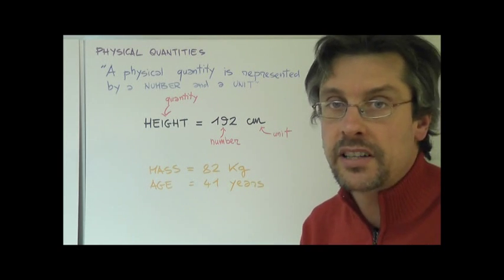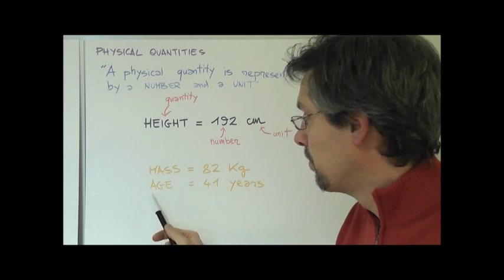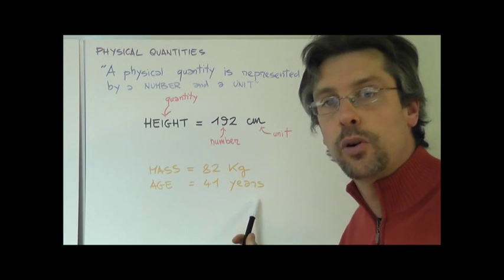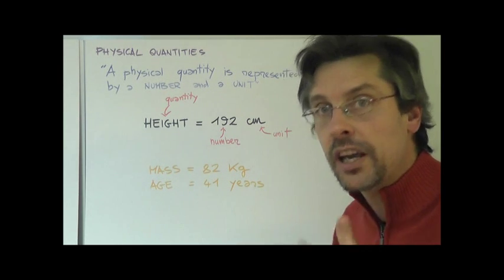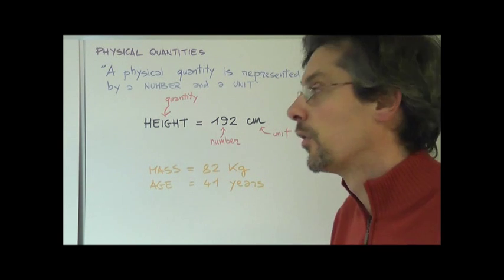We can make other examples. My mass, which is 82 kilograms. My age, another physical quantity, is 41 years. And we can go on with this list. Now, how fast I am, for instance.